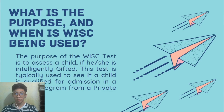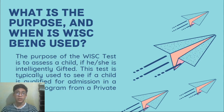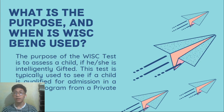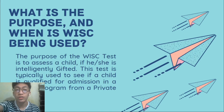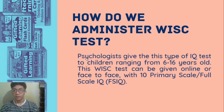In private schools, gifted programs allow qualified children to skip grade levels based on their IQ, because it is believed that highly gifted children with high IQ can learn what is taught at school on their own. Psychologists administer this IQ test for children ranging from 6 to 16 years old.